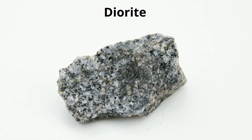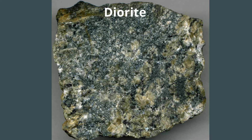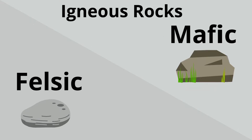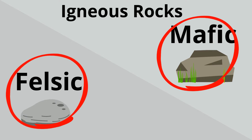One of the first things you'll notice about diorite is its color. It's considered an intermediate color because of the light and dark minerals, and it's a mixture between mafic and felsic.